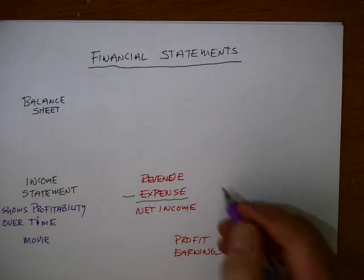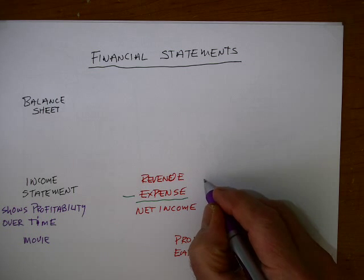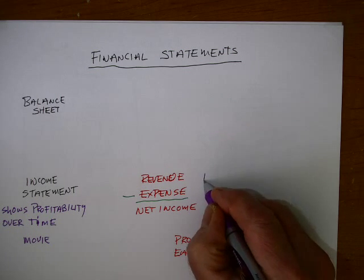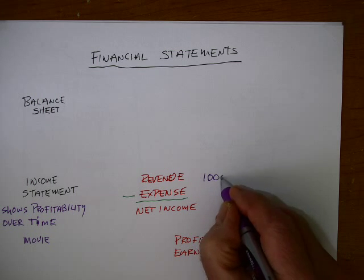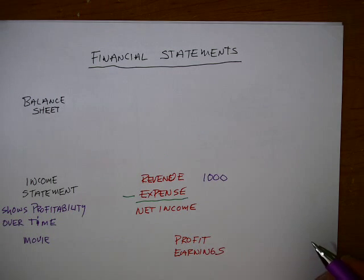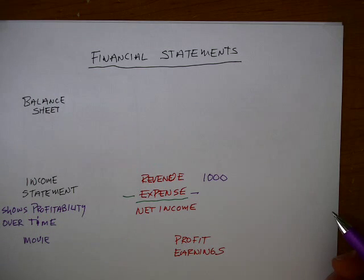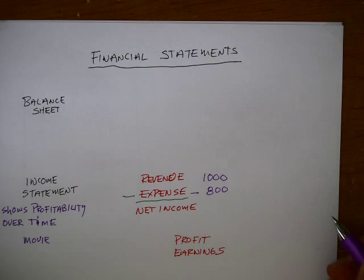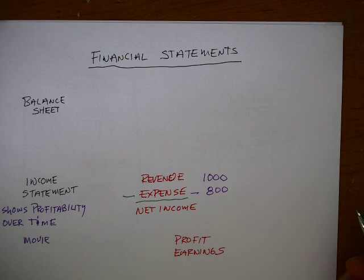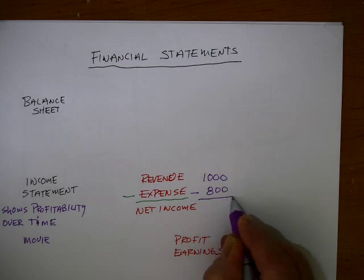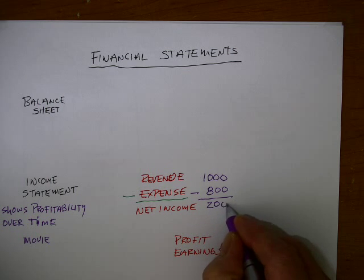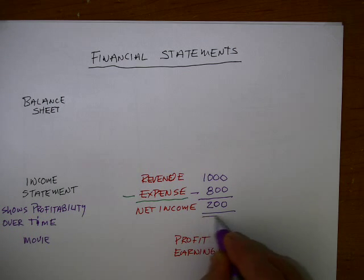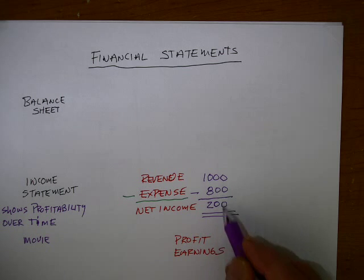Let's assume that you have a taxi company and you collect fares during your first week of operation of $1,000. That becomes your revenue. Let's assume that during the week you used up $800 worth of gas and oil, the driver's time, insurance, and so on. When we subtract those two, we come down to $200, which is the profit that belongs to the owner. Revenue minus expense equals your net income — there's your profit.